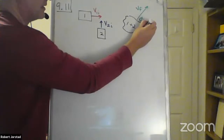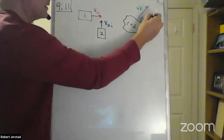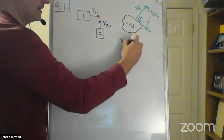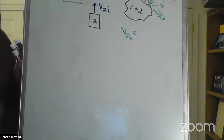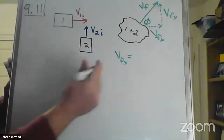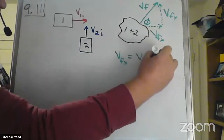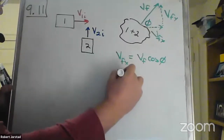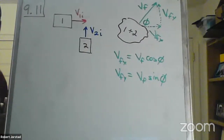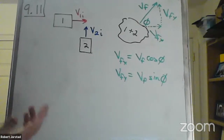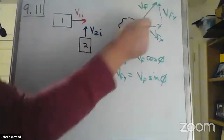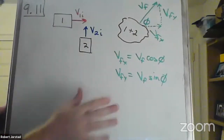In this case, we could call this V final X and this V final Y. If I call that angle phi, V final X would be V final cosine phi, and V final Y should equal V final sine phi. Standard split into components. This is positive because up; this is positive because right. Both are in the positive direction. I don't have to worry about minus signs in this problem.